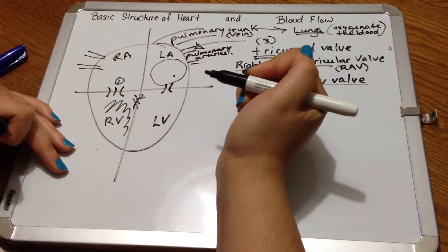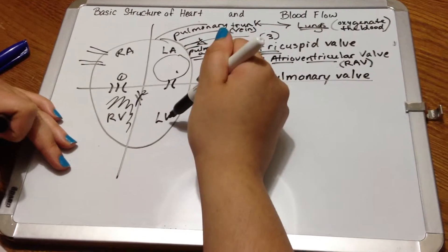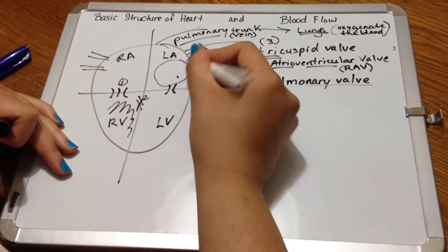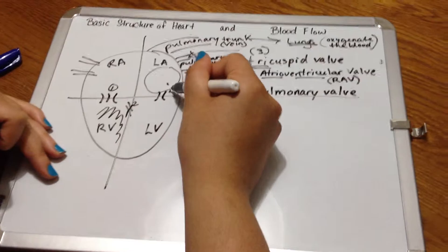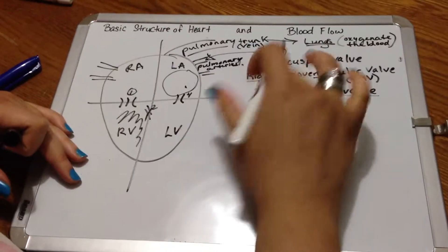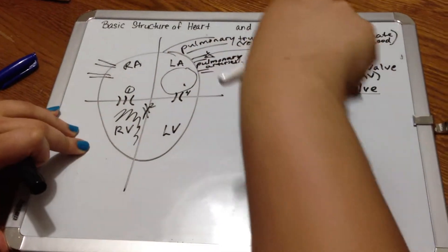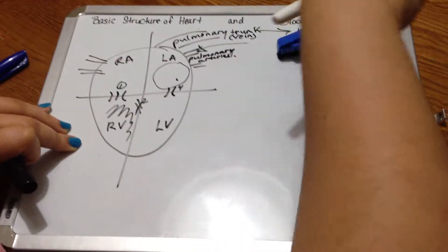Once it's in the left atrium, we end up with another valve connecting the left atrium and the left ventricle. So, this valve, I'm going to put as number four, and I'm going to go ahead and erase a bit to decongest my board.